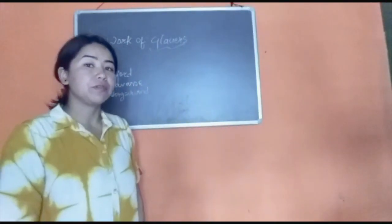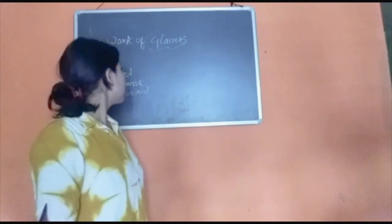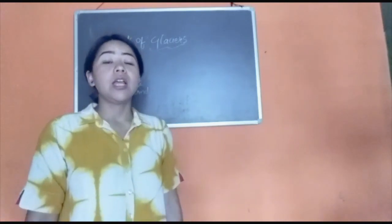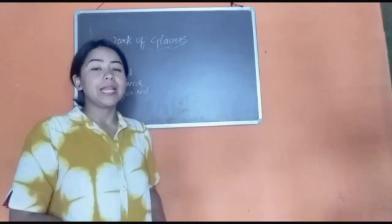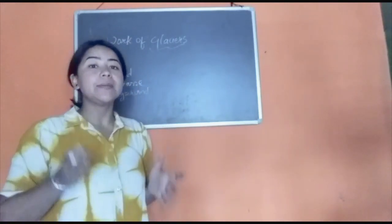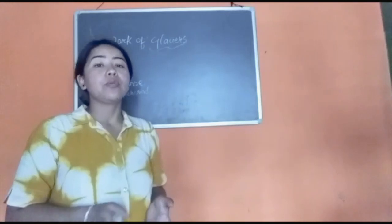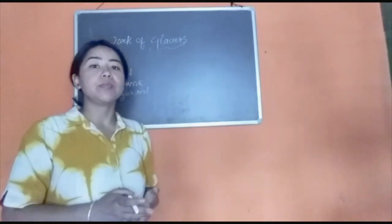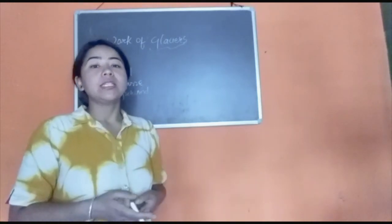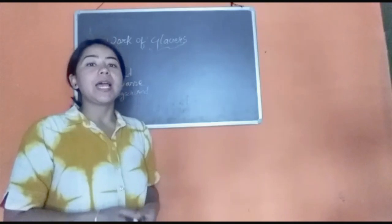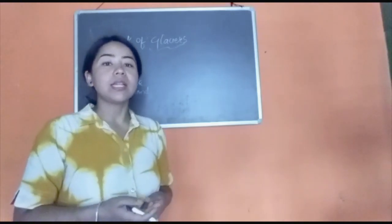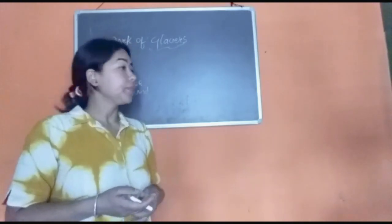Next we have fjords. Fjords are narrow inlets with very steep sides, which are mostly visible towards the polar regions where the distance between the ice line and sea level is less.